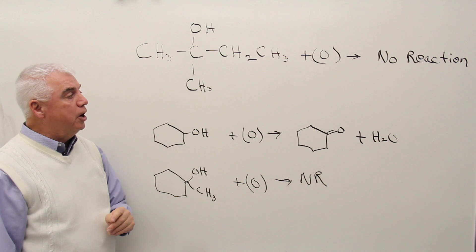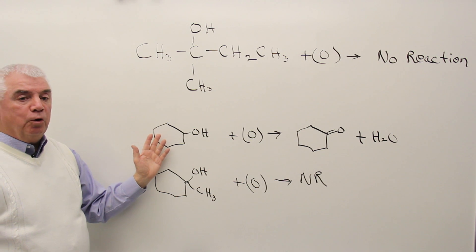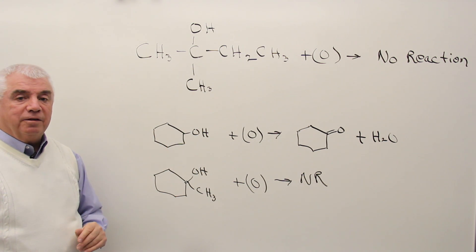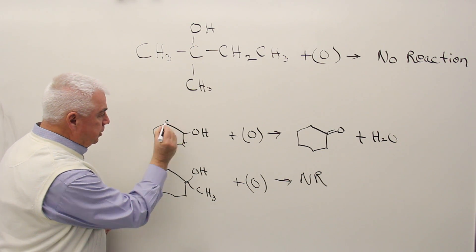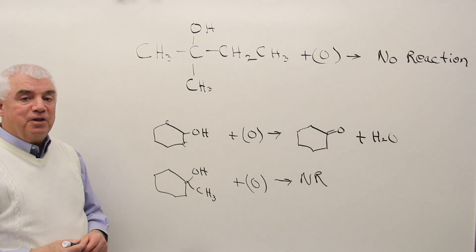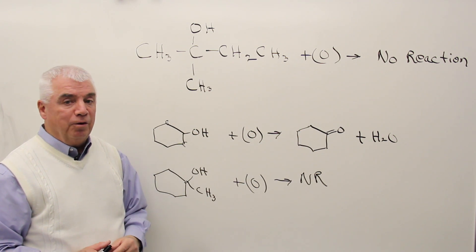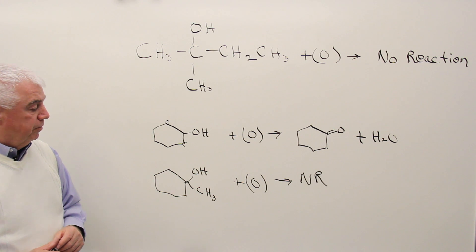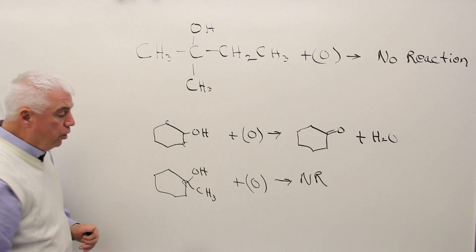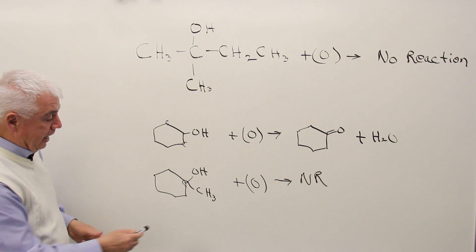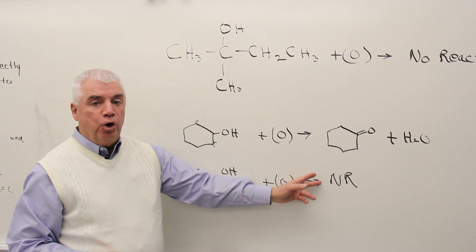A hydrogen would have to be attached to that carbon in order to leave with the OH. As an example, here's cyclohexanol. Is it primary, secondary, or tertiary? The carbon that has the OH attached is attached to two carbons, so it's a secondary alcohol — it's going to produce a ketone. Here's the structure of the ketone, plus water; the O stays at the same position. And in the second example, the carbon with the OH has no hydrogens on it — it's attached to three carbons, making it a tertiary alcohol. It can't be oxidized: no reaction.